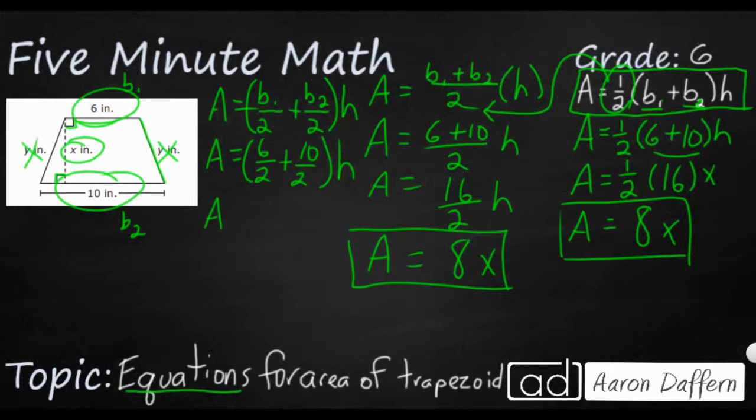Well, let's see what we have. We've got 6 divided by 2, that is 3. 10 divided by 2 is 5. And h, in this case, all we know is x. So A equals 8x. So there are three different ways that you can write the equation for the area of a trapezoid. And sometimes you'll see the answer in any of these three ways.